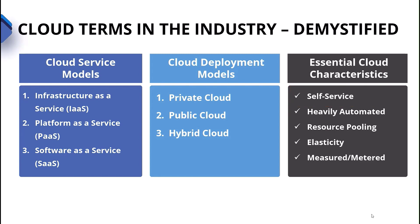That self-service hands off to automation. Being heavily automated is a key cloud characteristic. We don't want to put a ticket in and then wait for all these different teams to build everything for us. We want to put our request in through a portal, request that service, and have it delivered almost instantaneously where possible. Resource pooling is another key characteristic. Public cloud providers — often now known as hyperscalers — pool significant amounts of compute, storage, and network together in massive data centers and are able to disperse and share that with consumers of the cloud services.